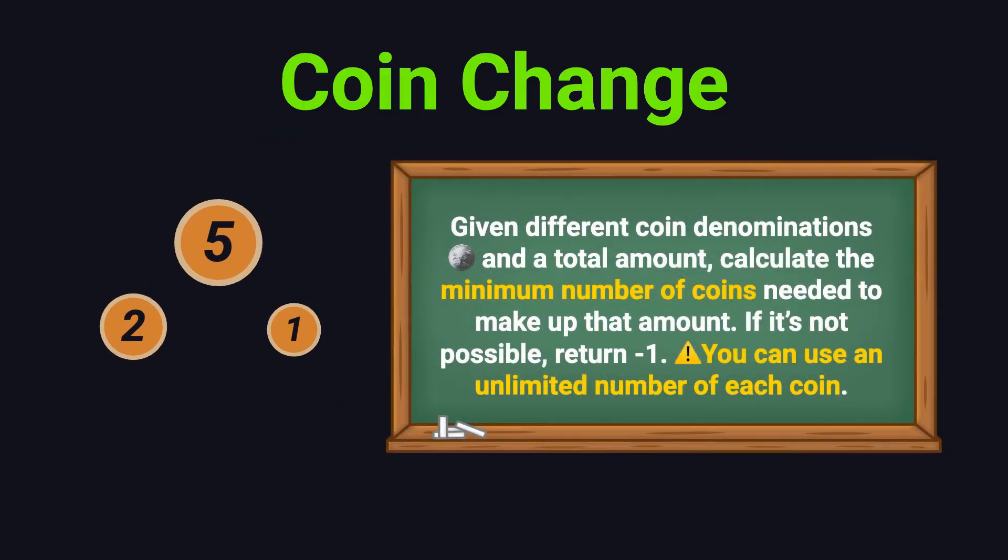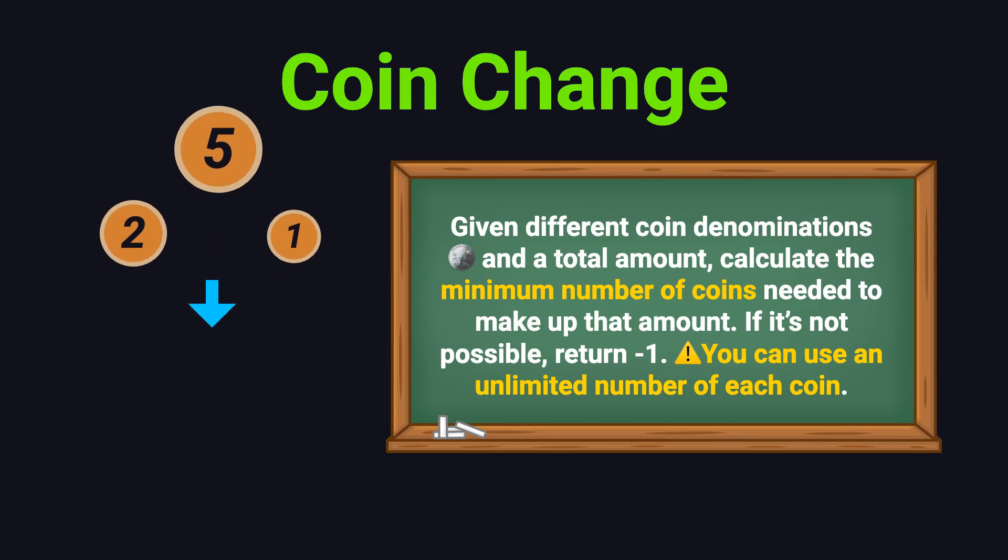Let's start with the problem description. You're given a set of coin denominations, for example, 1, 2, and 5. You're also given a target amount, say, 11. Your goal is to use as few coins as possible to make up exactly that amount. If you can do it, return the minimum number of coins needed. If it's impossible, return negative 1. And here's one important detail: you can use each coin as many times as you want.